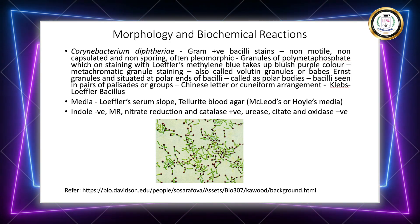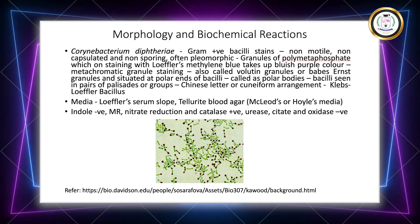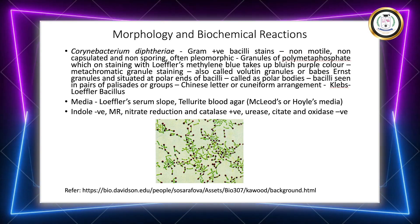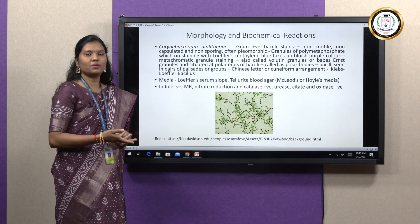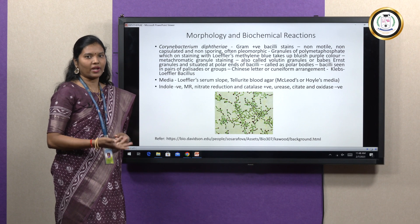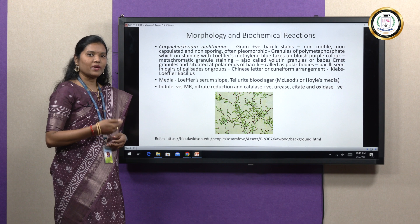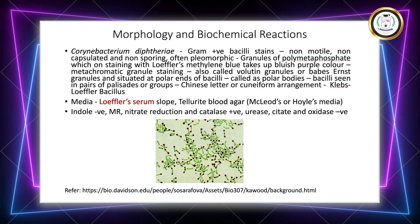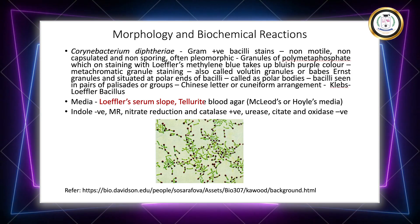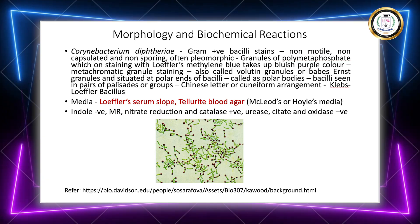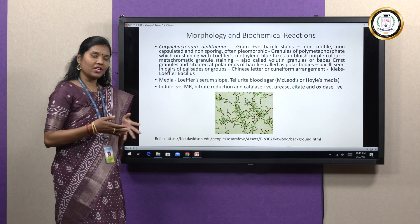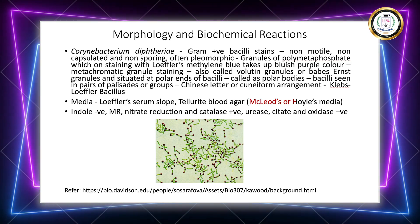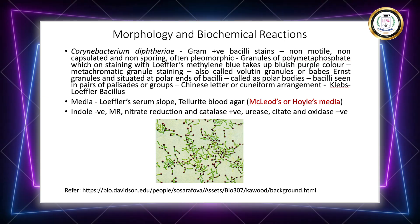Coming to the media employed, growth is very scanty on ordinary media, so it should be enriched with blood serum or egg. The special media employed would be Loeffler serum slope as well as tellurite blood agar. Generally, modifications of tellurite blood agar, especially Hoyle's or McLeod's media, are used.